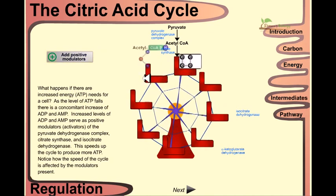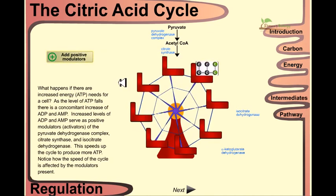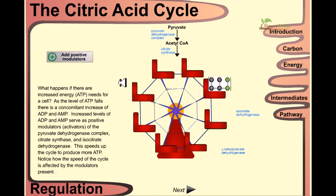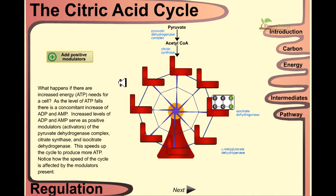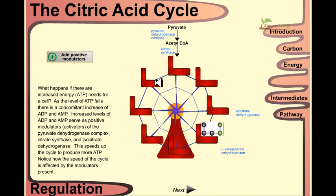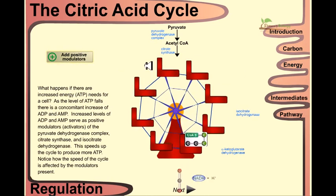But if we remove the positive modulators, then the reaction will happen very, very slower because in this case they don't need to produce much more ATP because ATP is already there.